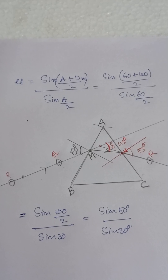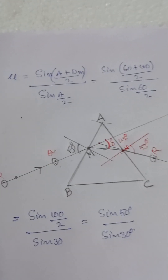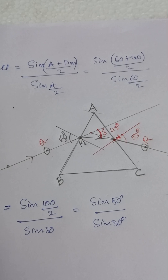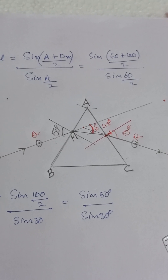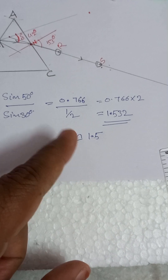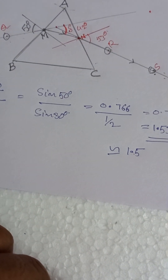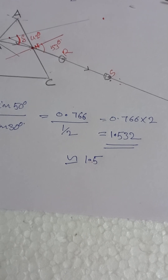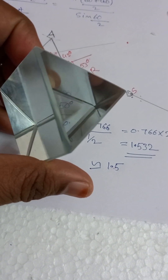The refractive index of the glass prism is found using the formula: μ = sin((A + δm)/2) / sin(A/2), where A is the angle of the prism, which is 60 degrees, and δm is 40 degrees. Substituting the values gives sin50° / sin30°. Using logarithm tables, sin50° = 0.766 and sin30° = 1/2, so 0.766 divided by 0.5 equals 1.532, which is nearly equal to 1.5. The refractive index of this glass prism is 1.5.